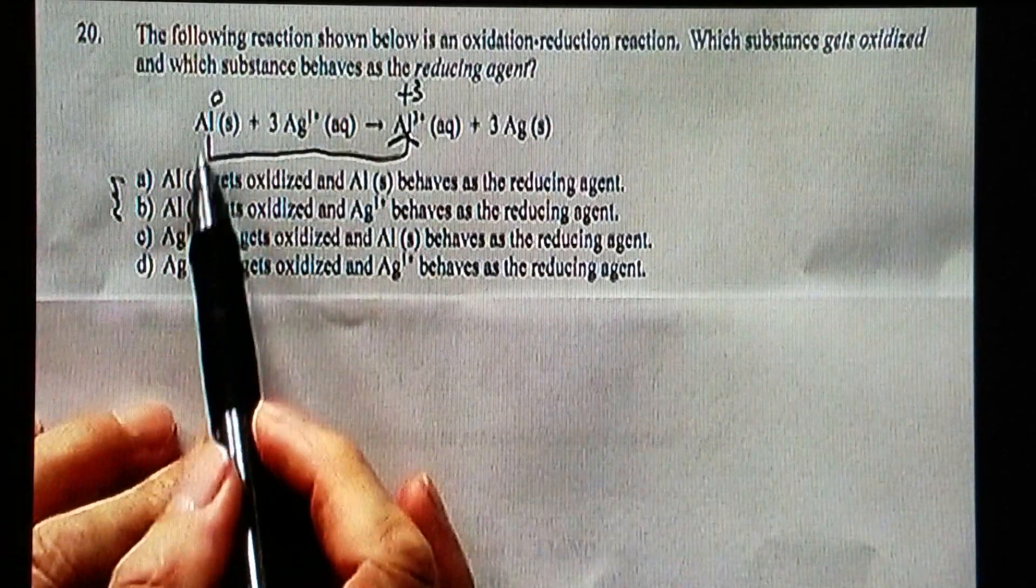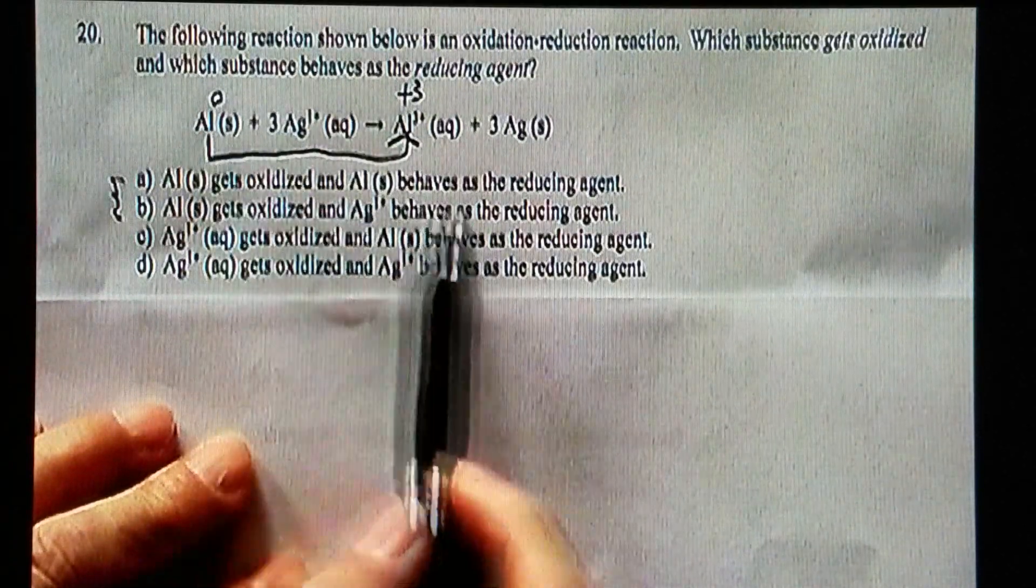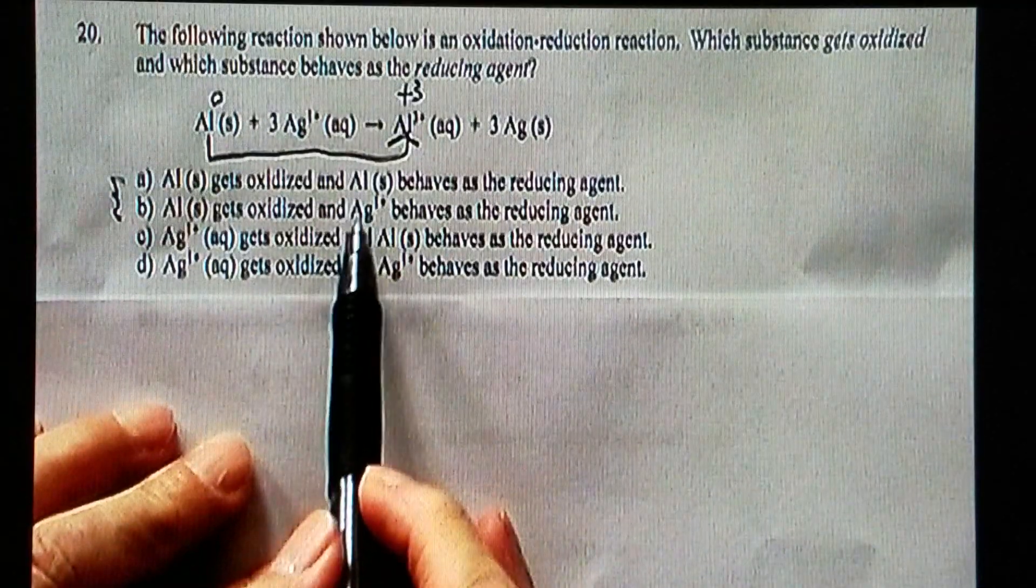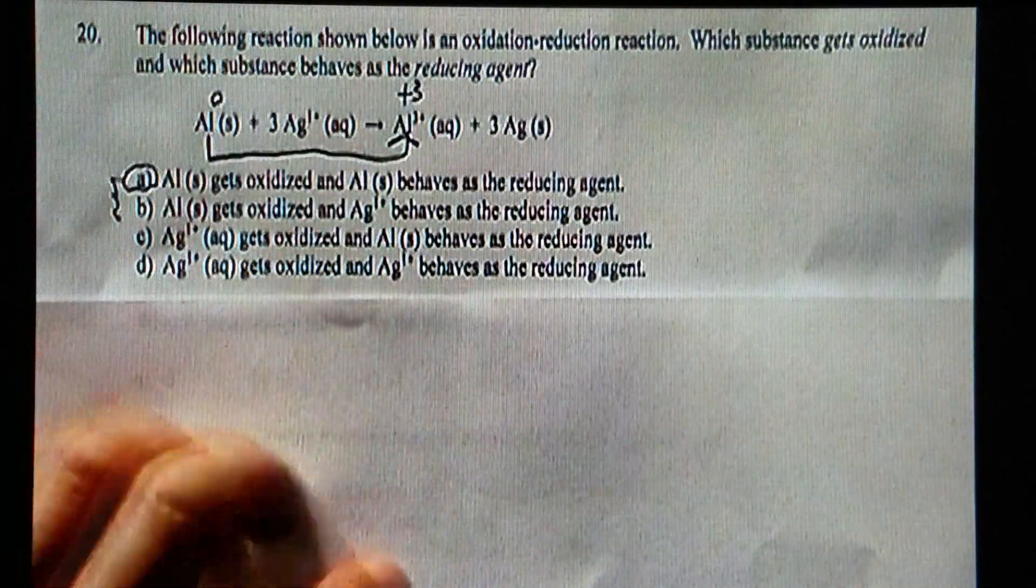So therefore, aluminum zero gets oxidized, and then aluminum zero behaves as the reducing agent, not silver one plus. So therefore, the correct answer should be A.